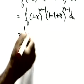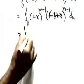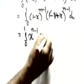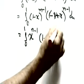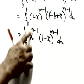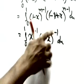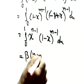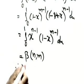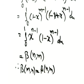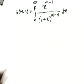After simplification, the 1 minus 1 cancels, leaving x^(n-1) times (1-x)^(m-1). This is exactly the definition of beta of n comma m. So the proof is complete: beta of m comma n equals beta of n comma m.